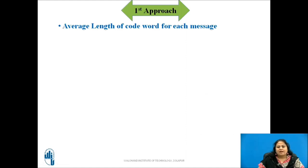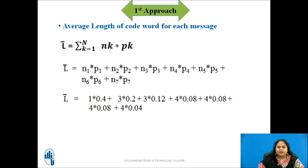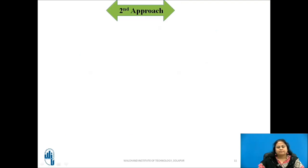The average length of codeword is then calculated using the formula of L̄. Expanding this equation and substituting the values, we get L̄ equal to 2.48 letters per message. Now let us use the second approach.